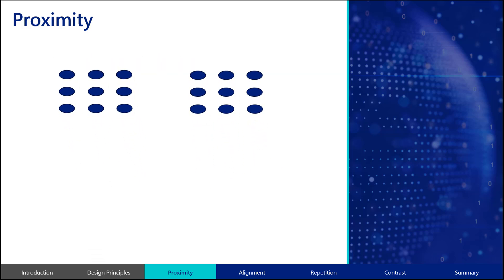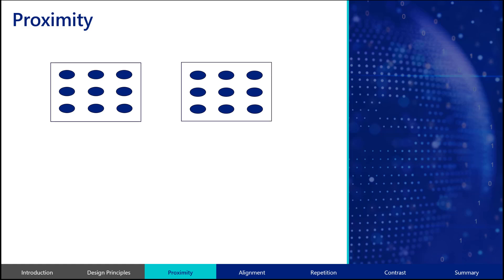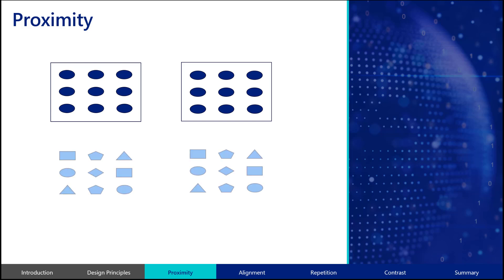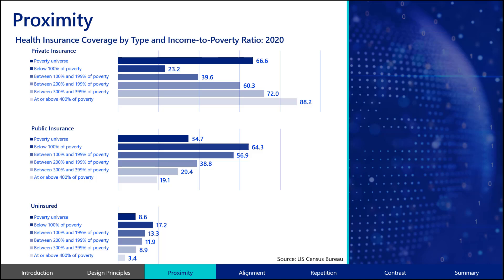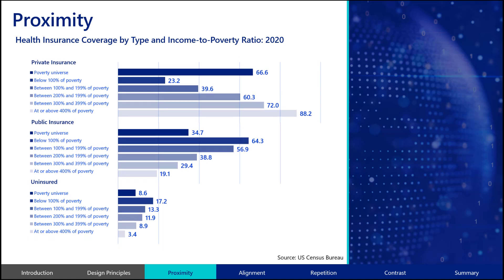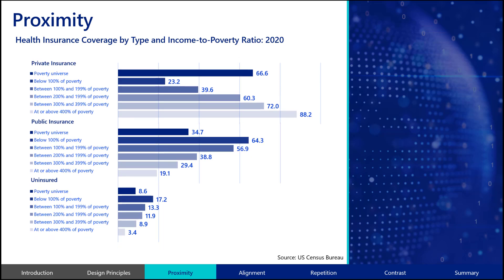As an example, even though the blue ovals on the screen are all the same, the arrangement of the ovals gives the sense of two separate groups and indicates the ovals within each group are related in some way. Even if there are differences within the groups, the placement of the shapes indicates a relationship within each group and a difference between the groups. When creating tables, graphs, or dashboards, place related elements close together. This allows your audience to quickly identify meaningful clusters and better understand that the elements are related.